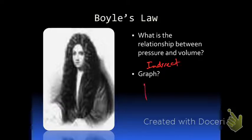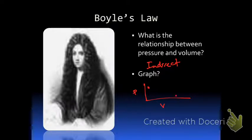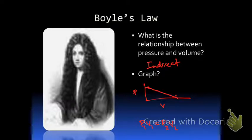If you graph pressure versus volume, low volume means high pressure and high volume means low pressure, so the line would look like it goes down — that would be the general trend. The equation for Boyle's Law is P1 times V1 equals P2 times V2.